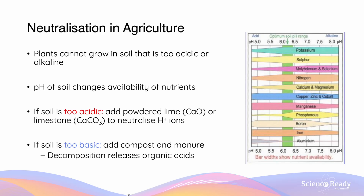Neutralization is necessary in agriculture to maintain an appropriate level of pH in the soil. The pH of the soil will change the availability of nutrients to plants, and plants are going to be quite sensitive to pH and will be unable to grow if it's too acidic or too alkaline.